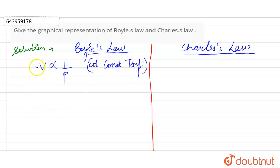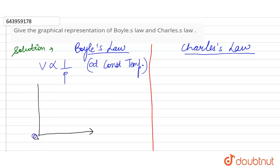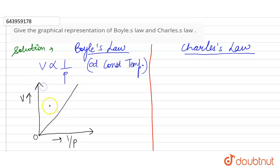Hence, if we increase the volume, the value of 1 by P also increases. Therefore, the graph of Boyle's law is V versus 1/P, and it is a straight line passing through the origin, because as volume increases, 1 by P also increases.